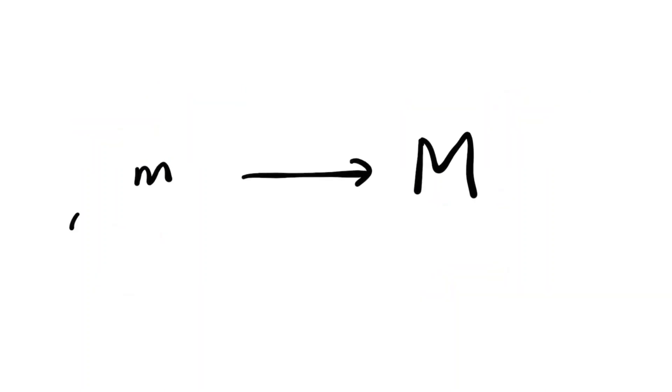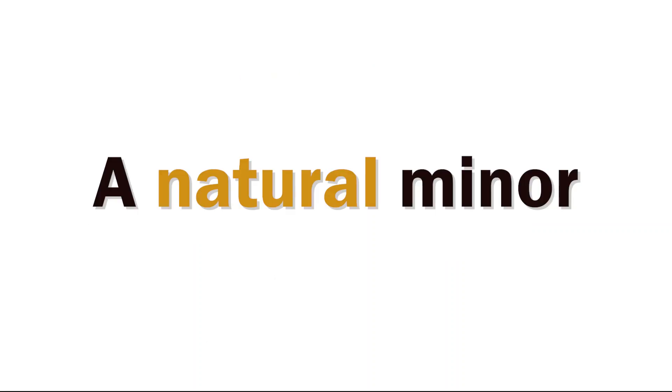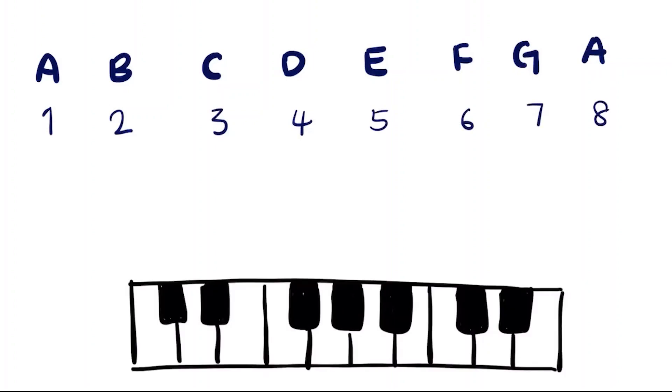An A minor scale consists of eight notes starting from A, but we don't know if it has any flats or sharps. So now we're going to use this three half-step method to find the relative major for the A minor scale.